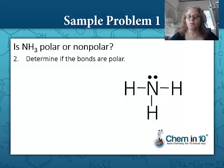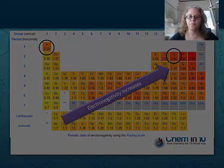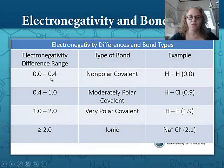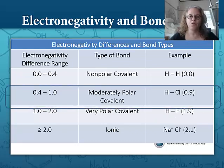Next, we need to determine if these bonds are polar by looking at electronegativity. We can use the trend, but this chart also has numbers. The electronegativity of nitrogen is 3.04, and the electronegativity of hydrogen is 2.20, so that difference is 0.84. According to the chart: a difference from 0 to 0.4 is nonpolar covalent; 0.4 to 1.0 is moderately polar covalent, like the hydrogen-chlorine bond; 1 to 2 is very polar covalent, like hydrogen and fluorine; and greater than or equal to 2 is probably ionic. In this case, 0.84 falls between 0.4 and 1.0, so we have a moderately polar covalent bond — the bonds are polar.